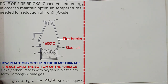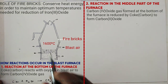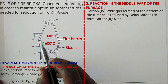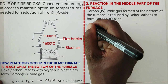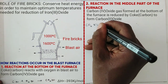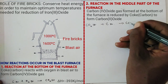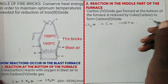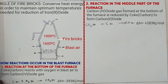In the middle part of the furnace, the carbon dioxide formed at the bottom is reduced by coke to form carbon monoxide (CO). Since the reaction is endothermic, the temperature drops. The equation is: CO2 (gas) + C (coke) → 2CO (gas), ΔH = +283 kJ/mol.